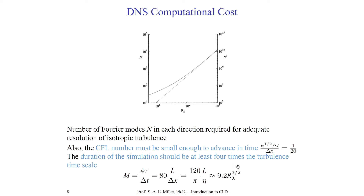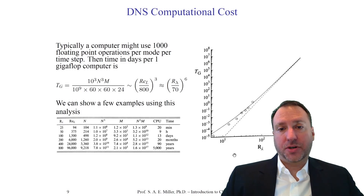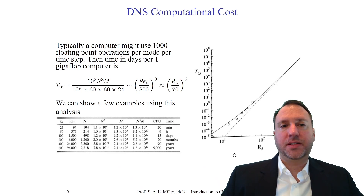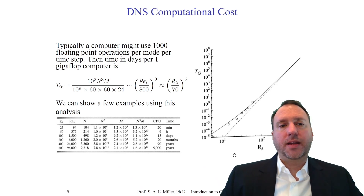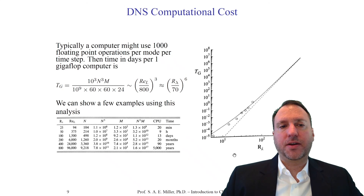This is also a large power greater than 1. For a large Taylor-Reynolds number, the required duration of simulation increases significantly — even for just four integral timescales. Let's put this on a cost basis. Typically a digital computer might use 1000 floating point operations per mode per time step. For a single 1-gigaflop computer as of 2020, the time in days goes as 10³ times the number of spatial modes times the number of time steps, with the denominator converting to days.